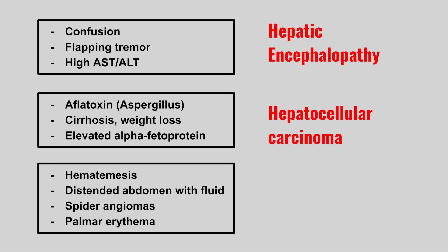The next patient has hematemesis, a distended abdomen with fluid, spider angiomas, and palmar erythema. This is cirrhosis. Look out for ascites (the distended abdomen) and hematemesis usually from ruptured esophageal varices. High estrogen effects from cirrhosis are high yield — they cause spider angiomas, palmar erythema, gynecomastia, and gonadal atrophy.